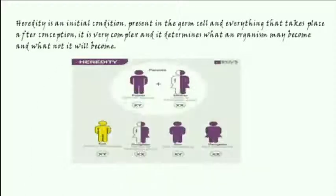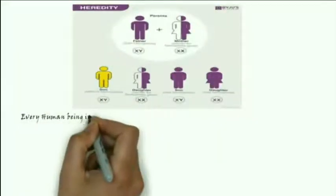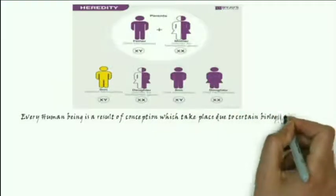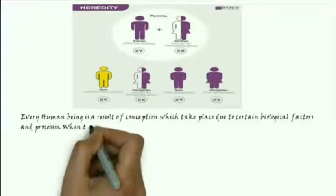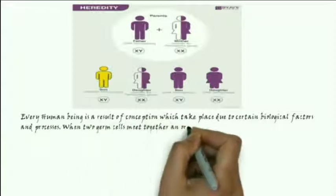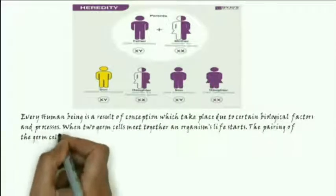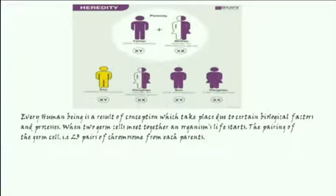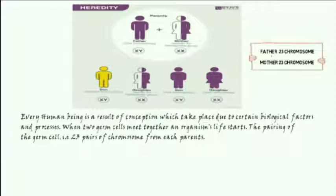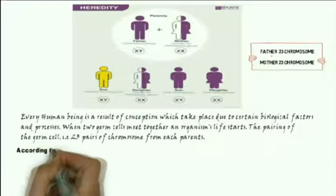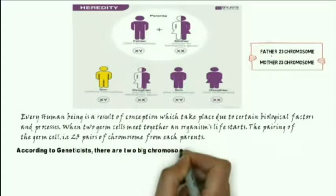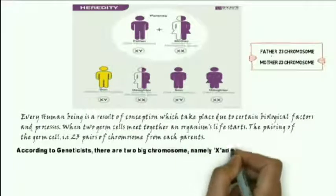Every human being is a result of conception which takes place due to certain biological factors and processes. When two germ cells meet together, an organism's life starts. Each germ cell bears 23 chromosomes — 23 from the father's side and 23 from the mother's side, making altogether 46 chromosomes. According to genetic science, there are two sex chromosomes, namely X and Y.